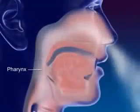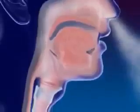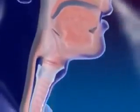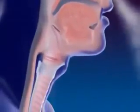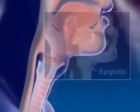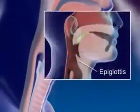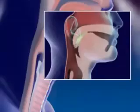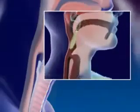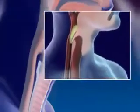Air moves into the pharynx, or throat, the common passageway for food and air. Air continues on to the larynx. The epiglottis, a flap of tissue in front of the larynx, closes off the larynx when swallowing to prevent food from entering.